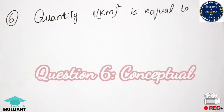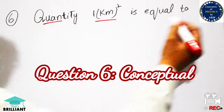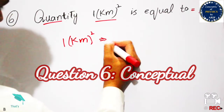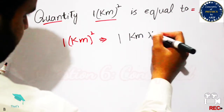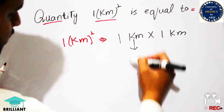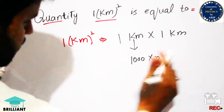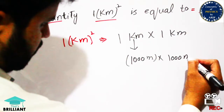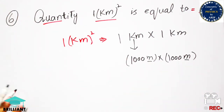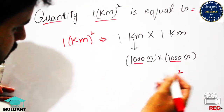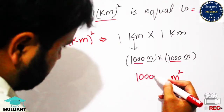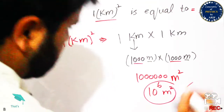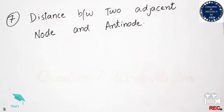The next question asks: what is (1 km)² equal to? We can write 1 km × 1 km separately. One kilometer equals 1000 meters, so we have 1000 m × 1000 m. Meter times meter gives meter squared; 1000 × 1000 gives six zeros after one, which is 10⁶. So the final answer is 10⁶ m².